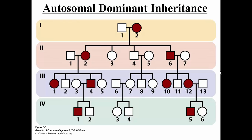Let's turn to the second type of inheritance pattern: autosomal dominant inheritance. Again, let's split it up — what about this pedigree makes us think autosomal, and what makes us think dominant? It's autosomal because you see both females and males affected by this disorder, shaded in at about equal frequency. What makes us think it's dominant? The fact that we never see this disorder skipping a generation — whenever you see it persist in the lineage, it's always in every generation. That makes us think it's dominant.